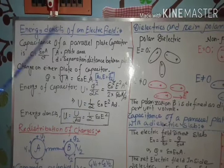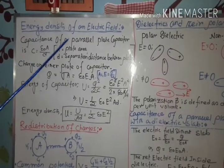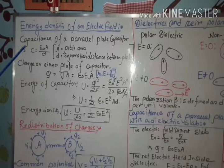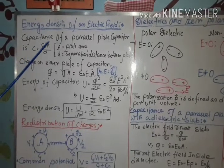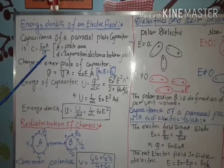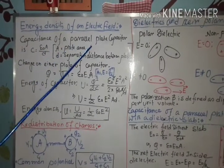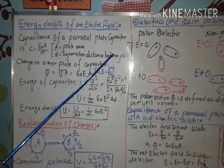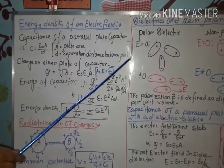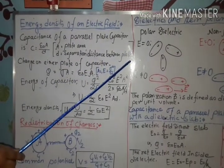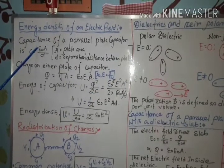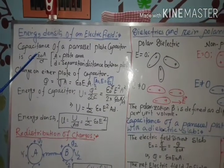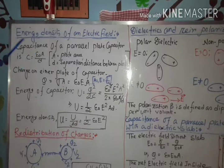Therefore, the capacitance of a parallel plate capacitor is C equal epsilon naught A by D, where A is the plate area and D is the separation distance between the plates. And epsilon naught is the permittivity of free space.